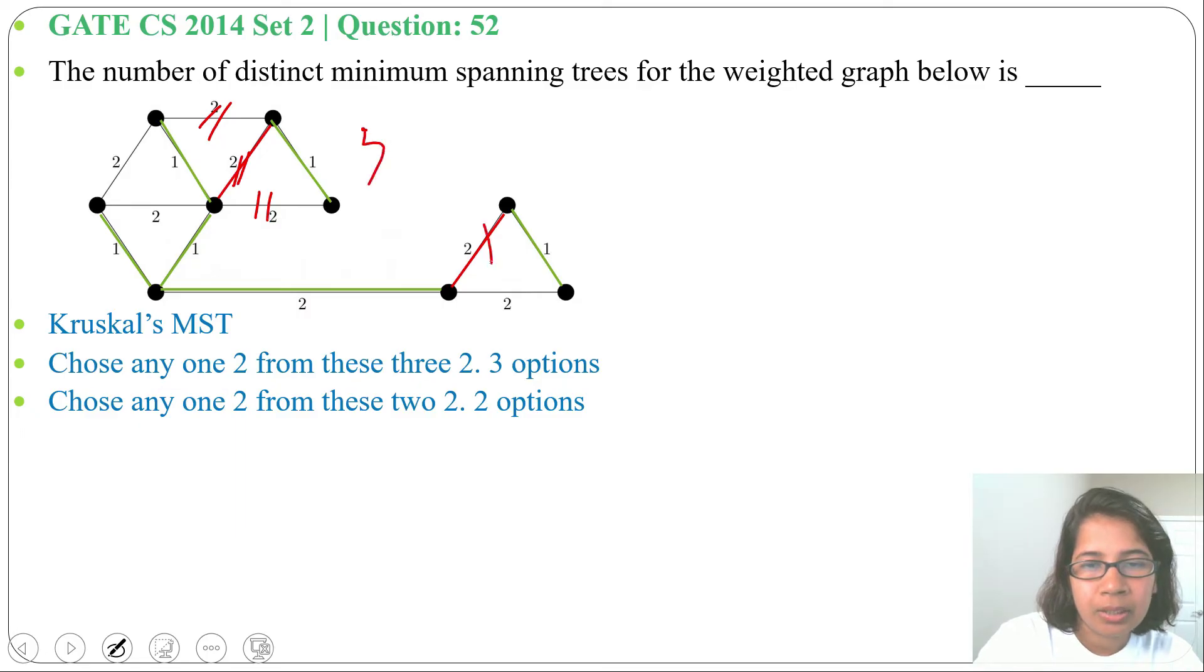So 3 multiplied by 2, total 6 options, 6 possibilities. We cannot choose these two 2s as they are creating cycles. So answer will be 6, 6 distinct minimum spanning trees possible for this weighted graph.